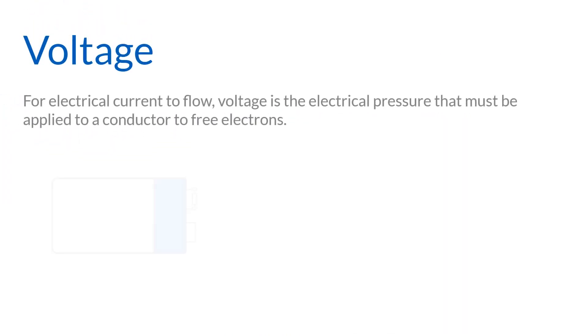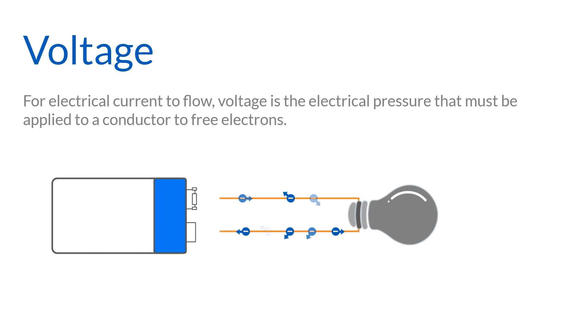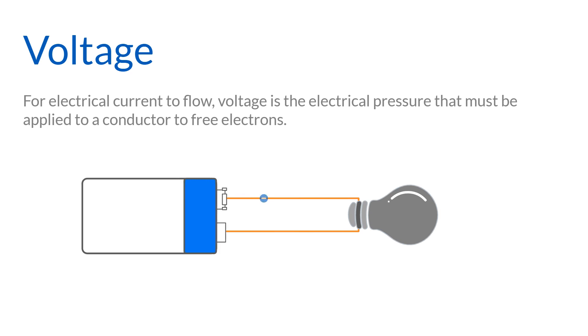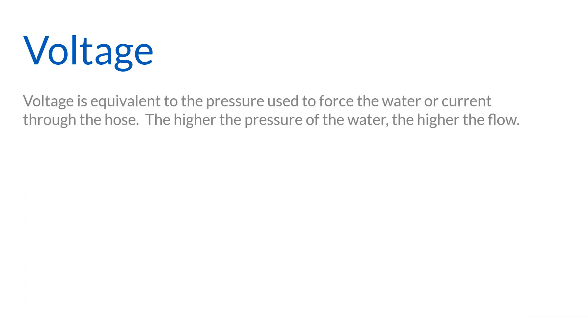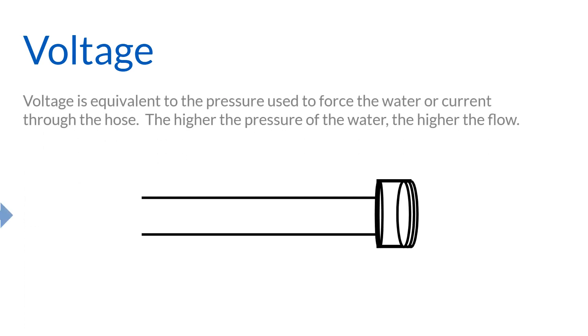For electrical current to flow, voltage is the electrical pressure that must be applied to a conductor to free electrons. Voltage behaves like a pushing force, forcing electrons to start moving in the same direction, which creates an electric current. Voltage is measured in volts and represented by the letter V. In our water analogy, voltage is equivalent to the pressure used to force the water or current through the hose.